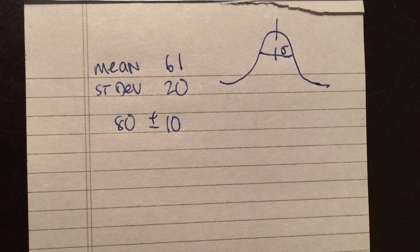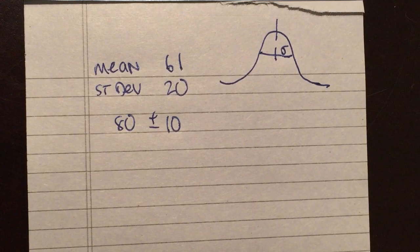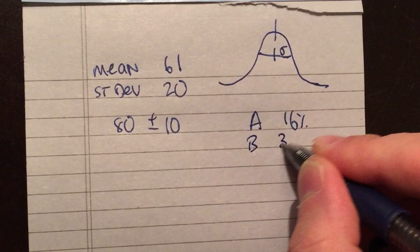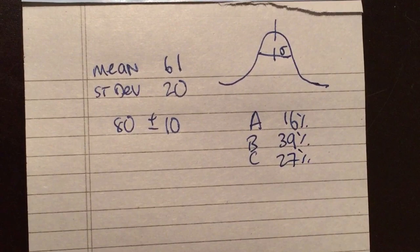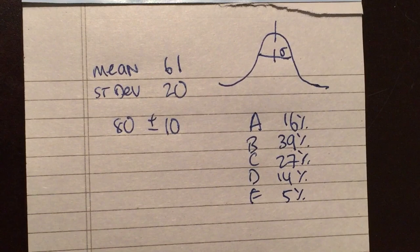What that means is that, after the curve, your grades go into the conventional system: 90 to 100 is an A, 80 to 90 is a B, 70 to 80 is a C, 60 to 70 is a D, and lower than 60 is an F. I can tell you the distribution: 16% got A's, 39% got B's, 27% got C's, 14% got D's, and 5% failed.